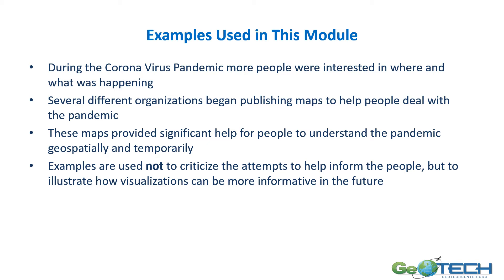The examples used in this module are from the coronavirus pandemic, when more people were interested in what and where, and more maps were being published. The maps provided significant help for people to understand what was happening near them or globally, and over time — what is today, what is projected in the future. The examples are used not to criticize those attempts; I think they were wonderful in helping inform people. But I really want to illustrate how visualizations can be more informative in the future.